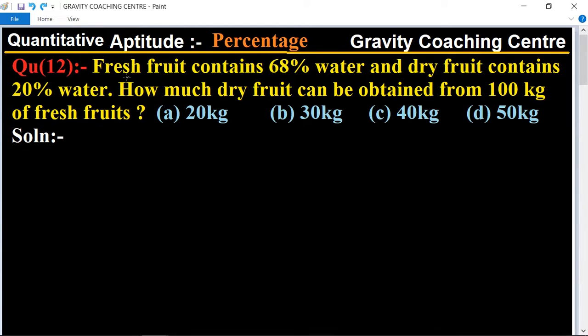In this given question, the fresh fruits contains 68% water and dry fruit contains 20%. Given weight of fresh fruit is 100 kg.